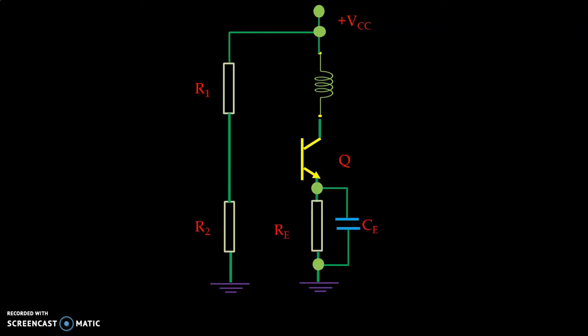Resistor Re is connected to the emitter circuit for stabilization and capacitor CE is connected as a bypass capacitor. We give energy for the oscillations to the tank circuit through a coupling capacitor that is CC2. Here we can see the coupling capacitor at the output side.